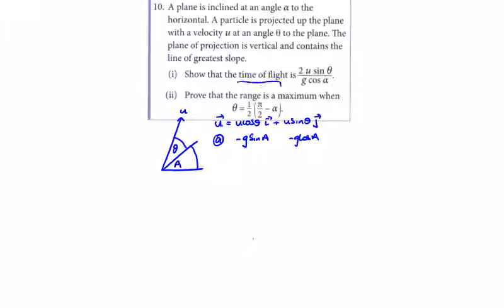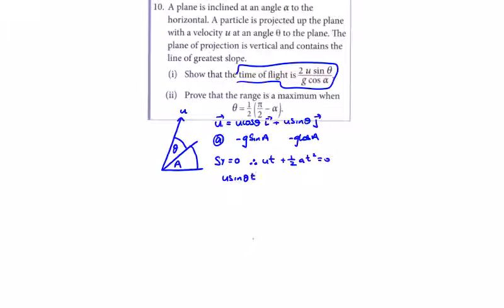We're looking for the time of flight, so we need s of y equal to 0. Using the kinematic equation ut plus a half at squared equal to 0, for the y direction we have u sin theta times t minus g cos alpha times t squared over 2, and that has to equal 0.